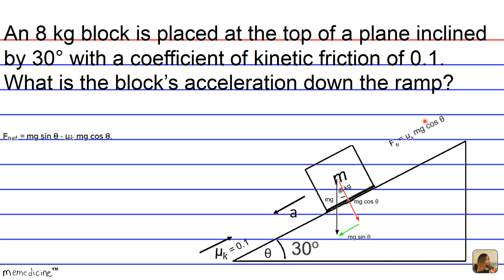Therefore, we have that F net is equivalent to mg sine theta. And minus the force of friction, which is also equal to mu sub k mg cosine theta.